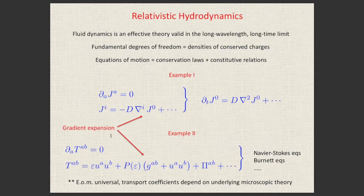Combining the conservation law and the constitutive relation gives the diffusion equation. For the energy-momentum tensor, the same structure applies. Truncating the gradient expansion at zeroth order gives the relativistic Euler equation; including first derivatives gives the relativistic Navier-Stokes equations; second-order terms give the Burnett equations, and so on. This is the systematic way to build hydrodynamics.